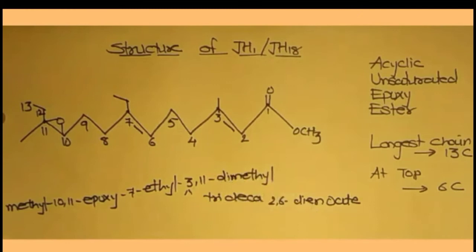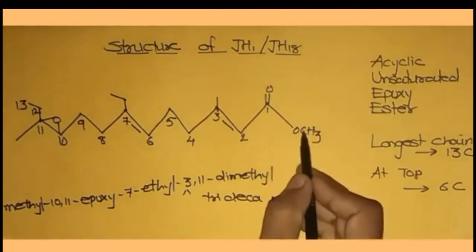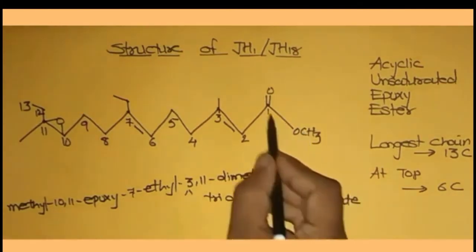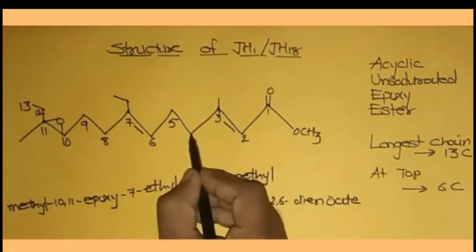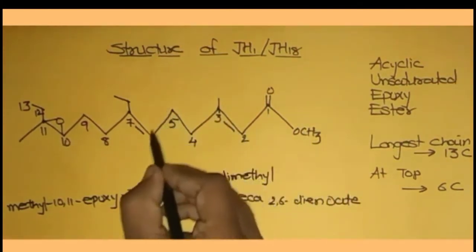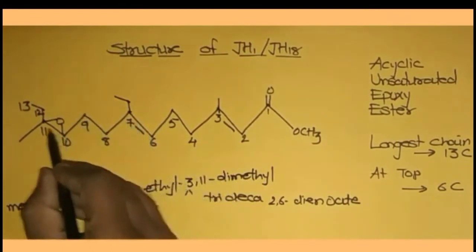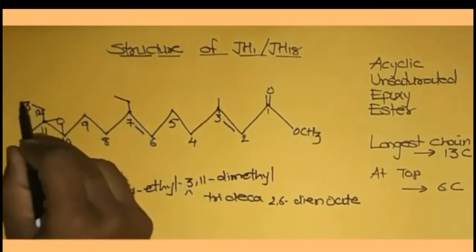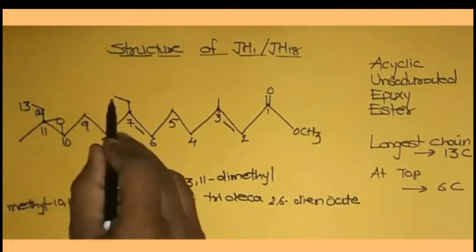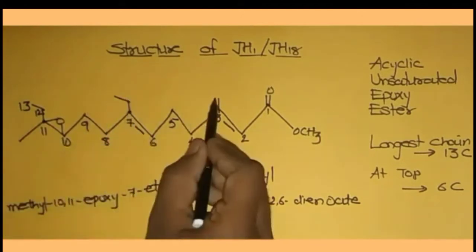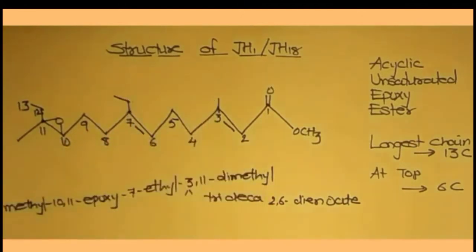So this is the structure for JH1, also called JH18, because it contains 18 carbon atoms total. Let's verify: 1, 2, 3, 4, 5, 6, 7, 8, 9, 10, 11, 12, 13, 14, 15, 16, 17, and 18 — overall 18 carbon atoms confirmed. Meyer later confirmed the structure of JH1.